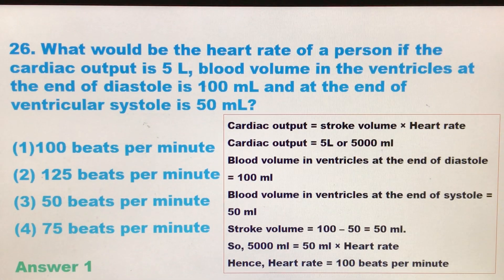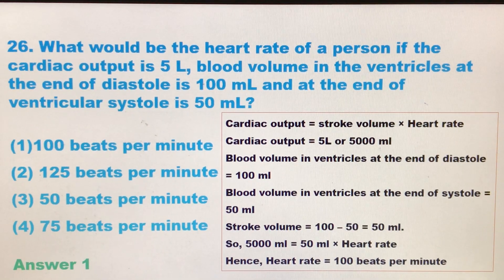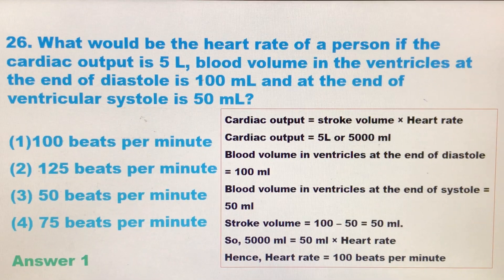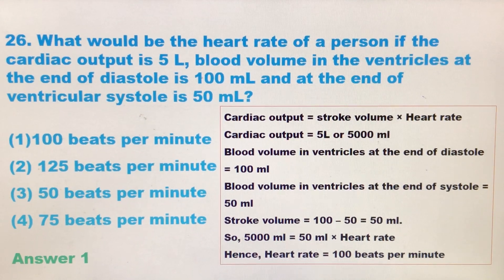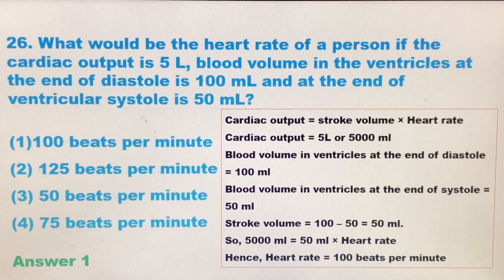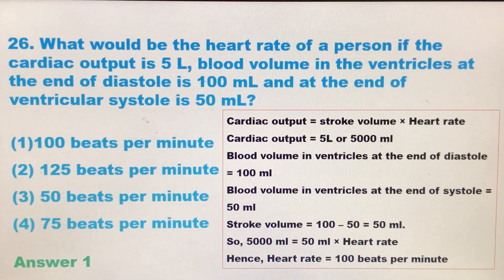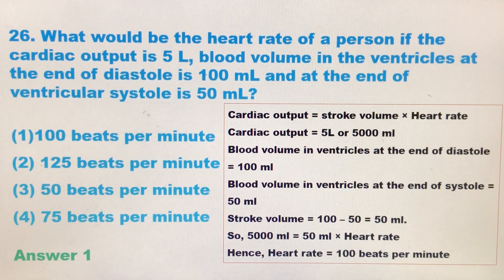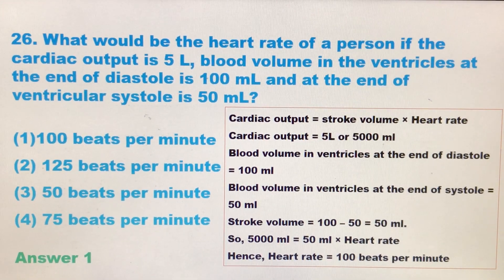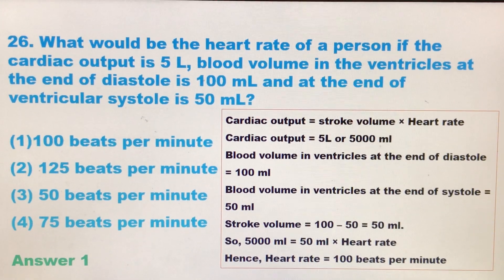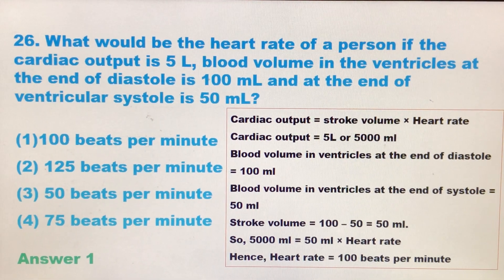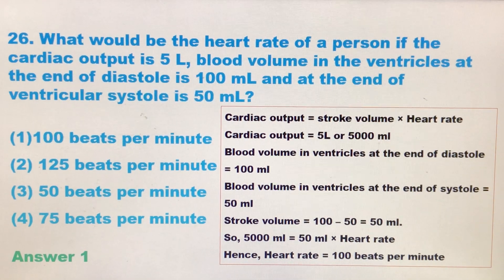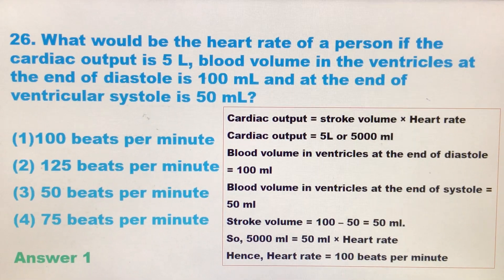What we have to find is heart rate. The three given input values are: cardiac output which is 5 liters, the blood volume at the end of diastole in the ventricle is 100 ml, and the blood volume in the ventricle at the end of systole is 50 ml. From these three given data, we will find the heart rate using the formula for cardiac output. Generally, cardiac output is calculated by multiplying stroke volume into heart rate.